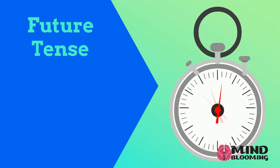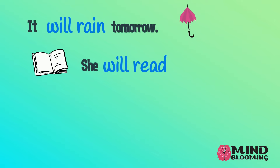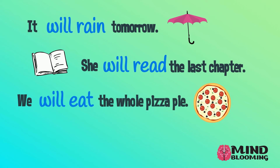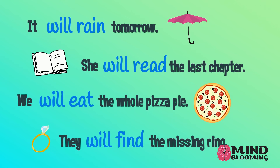Future tense means it will happen. And in that case, we add the word 'will' before the verb. It will rain tomorrow. She will read the last chapter. We will eat the whole pizza pie. They will find the missing ring. For all these examples, it shows that it will happen in the future.